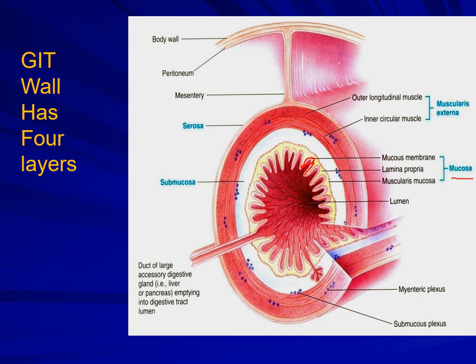The second major layer is submucosa, on the outer aspect of mucosa. This layer is made up of connective tissue. It contains blood vessels, lymphatics, and a network of nerve cells and nerve fibers called the submucosal plexus, also known as Meissner's plexus.